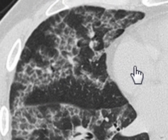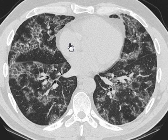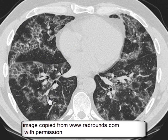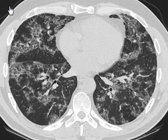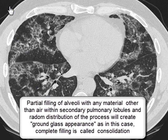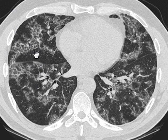This image is a good example of both septal thickening, which indicates interstitial abnormality, and ground glass opacity distributed randomly throughout both lungs. Ground glass opacity signifies an alveolar process, which has involved all or some of the secondary pulmonary lobules — some lobules are affected while others are not. This combination of findings is known as the crazy paving pattern, which resembles a pavement.